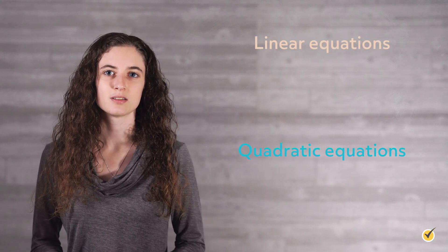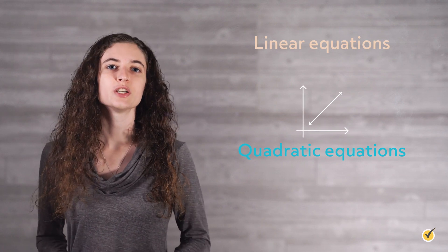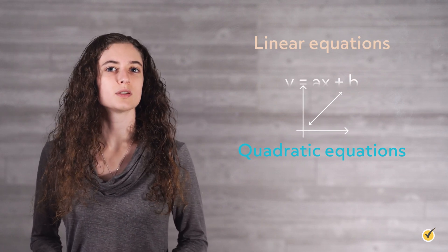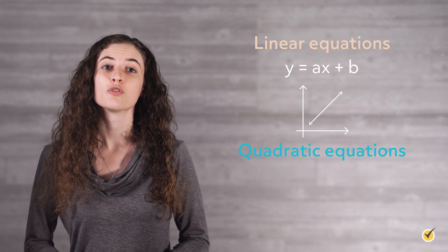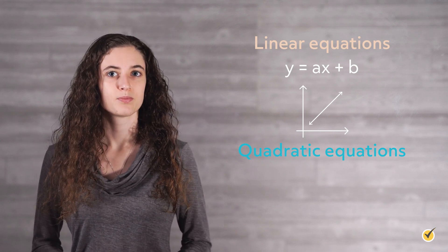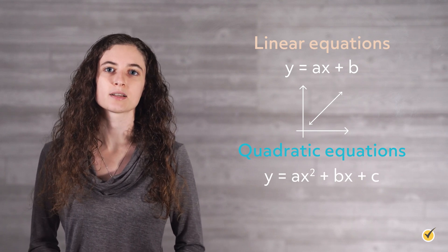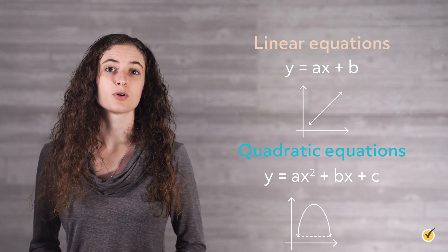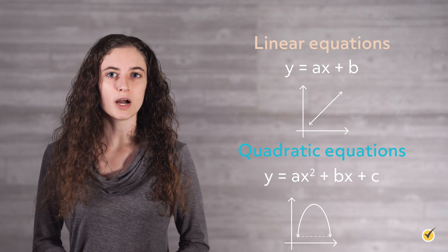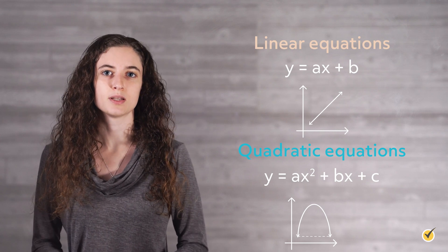Before we get into how to solve these systems, let's review the differences between linear and quadratic equations. Linear equations are equations that graph as a line. They are equations that can be written as y equals ax plus b. Notice that neither y nor x is to a power or a root. Quadratic equations are equations of the form y equals ax squared plus bx plus c, and they graph as a parabola. Notice that the y term is still not to a power or a root, but we do have an x term that is squared.